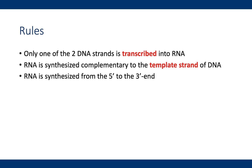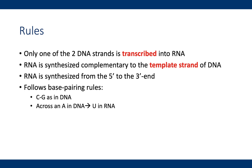Like DNA, RNA is synthesized from the five prime to the three prime end, and it follows base pairing rules. As in DNA, cytosine C pairs with guanine G and vice versa. However, RNA uses uracil U instead of thymine. So across an adenine A in DNA there will be a uracil U, and across a thymine T in DNA there will be an adenine.